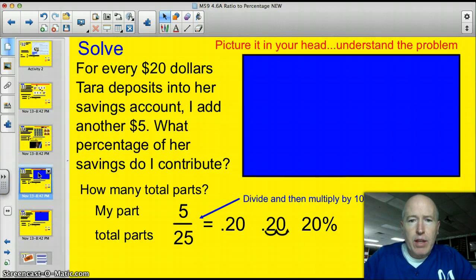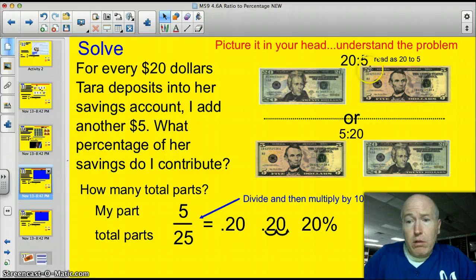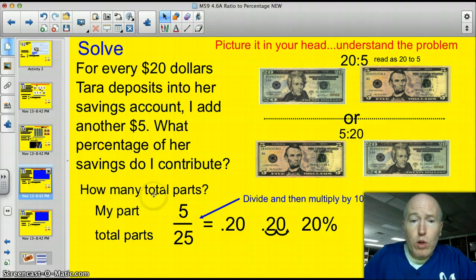Let's try a couple more examples together. Now, I'm going to have you work on picturing it in your head yourself. For every $20 Tara deposits into her savings account, I add another $5. What percentage of her savings do I contribute? Did you picture some dollar bills or maybe some $5 and $20 bills? That's what I would do right here. I would picture it like a $20 bill with a colon and a $5 bill. This is going to be Tara's money and then this is my money that I'm contributing. Or, I could flip it around either way, but I have my colon and I have my picture in my head. So, I need to know my total parts. She's depositing a total of $25 because it's the total of these two together. And, my part of that is only $5. So, it's 5/25. And, if I put that into the calculator, I'm going to get 0.2. And, then I can simply multiply by 100 moving that decimal and I get my 20%.